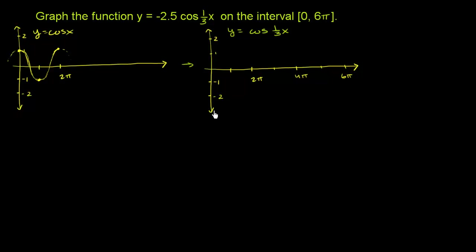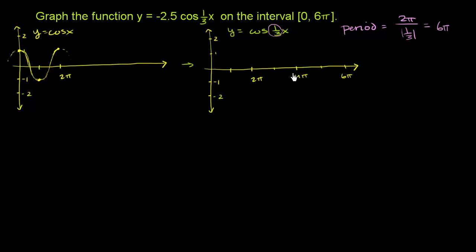There are a couple of ways to think about it. To complete an entire cycle, we're going to go 3 times slower. The period of cosine of 1 third x is 2 pi divided by the absolute value of 1 third, which is 2 pi over 1 third, the same as 2 pi times 3, which is 6 pi. It's going to take three times as much time because whenever we take x, we're taking 1 third of it. So x now has to equal 6 pi to get 2 pi inputted into the cosine function. The period is now 6 pi.